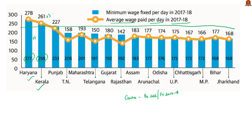But most states, especially 8 major states, have paid wages less than what the states have promised. The states with the lowest fixed wages are Bihar and Jharkhand at 168 rupees. Bihar has paid an average of 9 rupees extra — that is 177 rupees — than the promised 168 rupees, and Jharkhand has paid exactly what it promised, that is 168 rupees. Note that these are average wage amounts taken for calculation; within states at intra-district level, the amounts can vary.